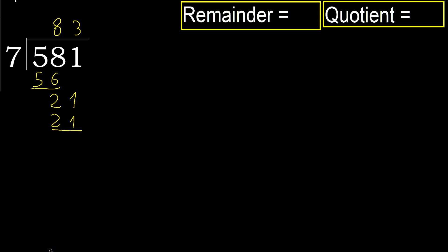Subtract: 21 minus 21 is 0. Next, there is no number, therefore finish it.